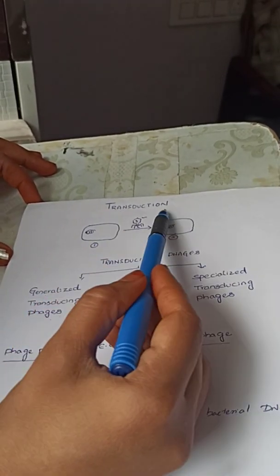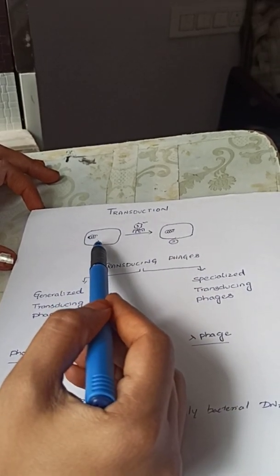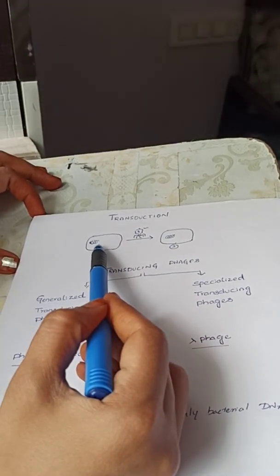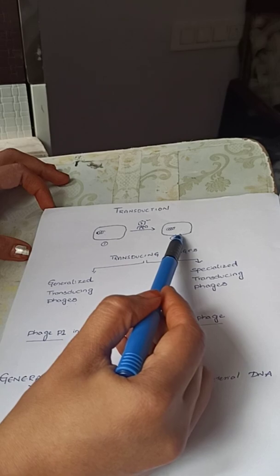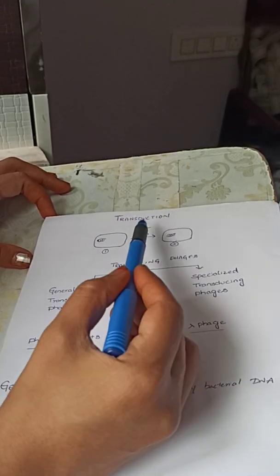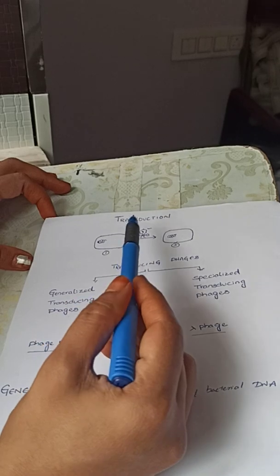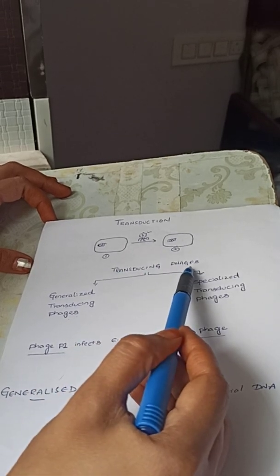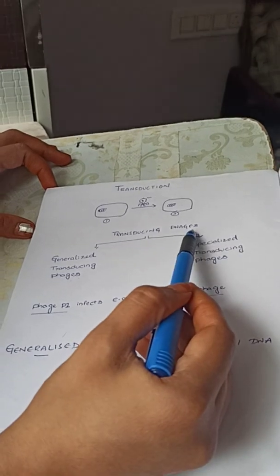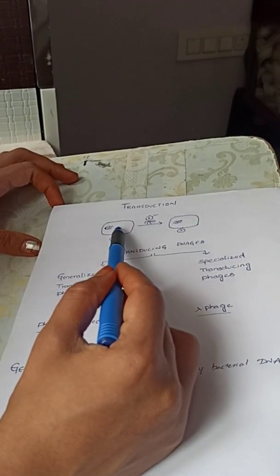Transduction is a genetic recombination method. It is a method of horizontal gene transfer, meaning DNA from one bacterial cell enters into another bacteria of the same generation. This transport of DNA happens with the help of a virus particle. We call this virus particle that helps in the transport of genetic material from one bacterial cell to another as transducing phages. Transducing particles or transducing phages are the virus particles that play a role in transporting the DNA fragment from one bacterial cell to another.